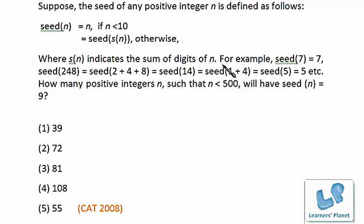For example, seed(7) = 7. Seed(248) = seed(2+4+8) = seed(14) = seed(1+4) = seed(5) = 5. Now, how many positive integers n such that n < 500 will have seed(n) = 9?